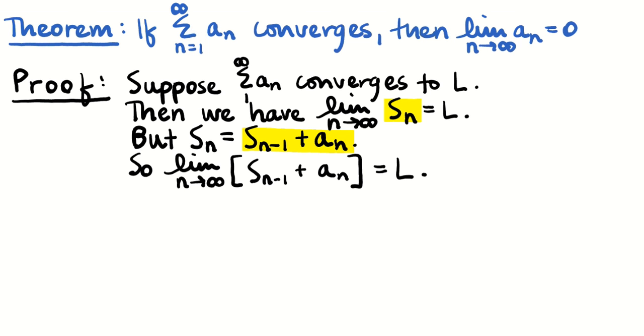Now, I want to apply a limit property here and split that limit out, so that I can write the limit of the sum as the sum of two limits. And I know that as n approaches infinity, n minus 1 is also going to be approaching infinity.